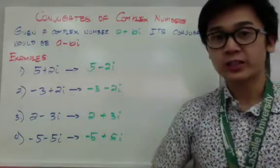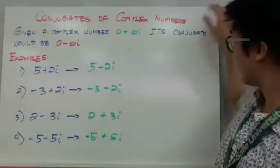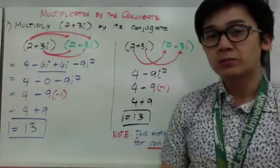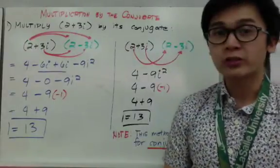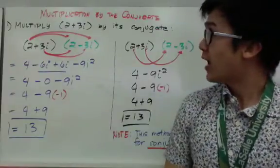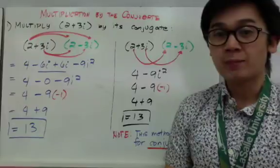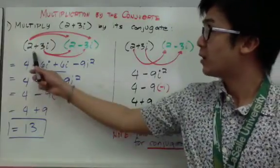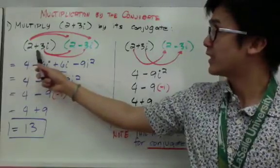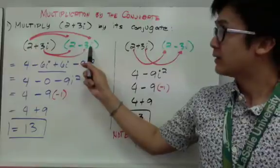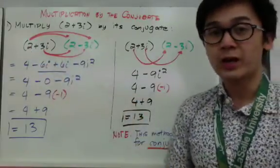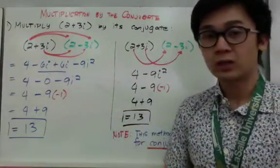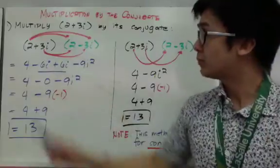Before we can divide complex numbers, we need to learn how to multiply conjugates. If I have the complex number two plus three i and I'm asked to multiply it by its conjugate, I would have two plus three i multiplied by two minus three i. This is an important method used in dividing complex numbers, so let's use the FOIL method, which we use for multiplying two binomials.